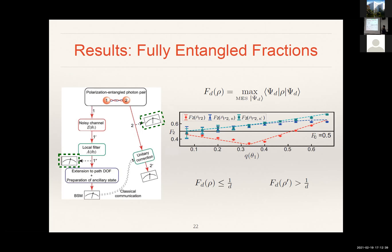So here are the results from the experiment. On the horizontal axis I have the parameter q, and we have 10 data points corresponding to 10 different values of q. On the vertical axis I have the fully entangled fraction for qubits. The horizontal line marks the classical threshold. Initially — just after the noisy channel but before filtering — as long as q is more or less below one-half, the fully entangled fraction is below this horizontal line: it was useless. But after the filtering operations, we end up with points that are above the threshold — except for this low-q region where the count rate was too low and we have much larger error bars.